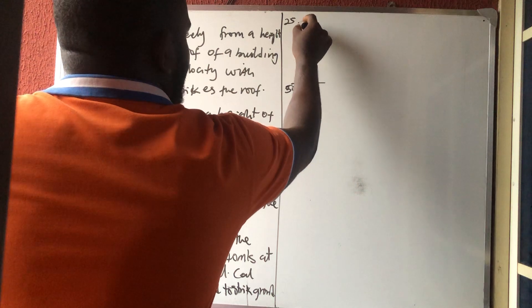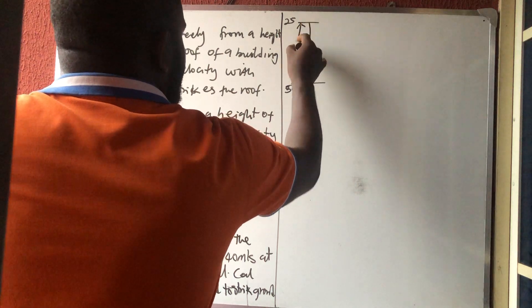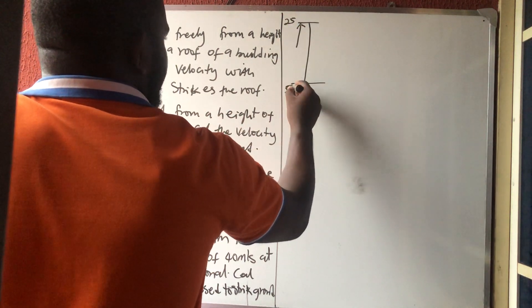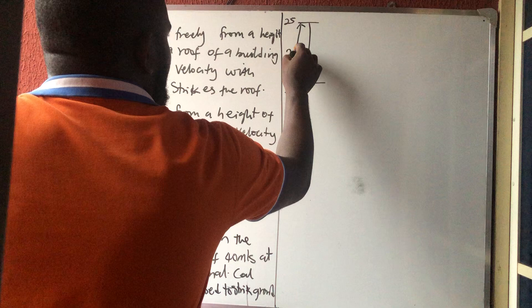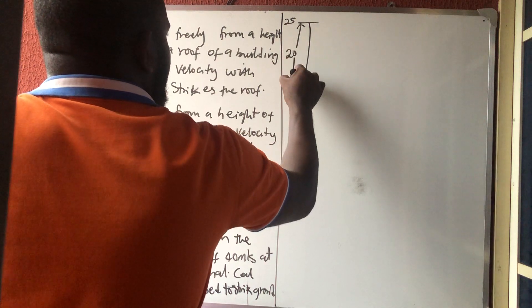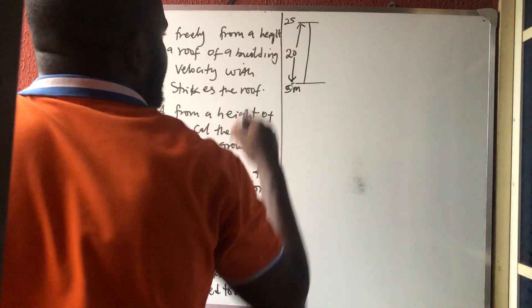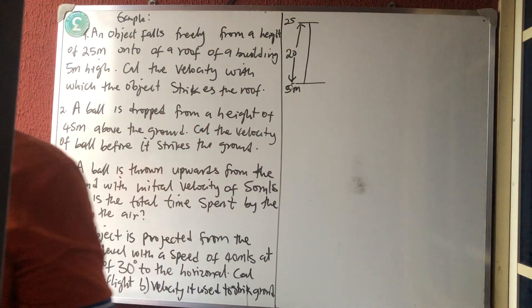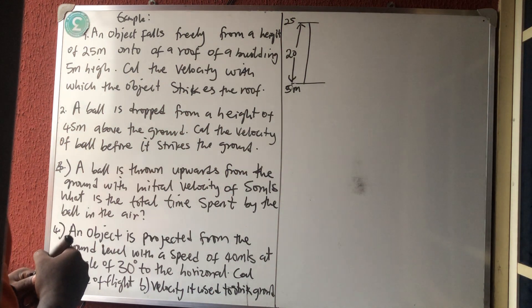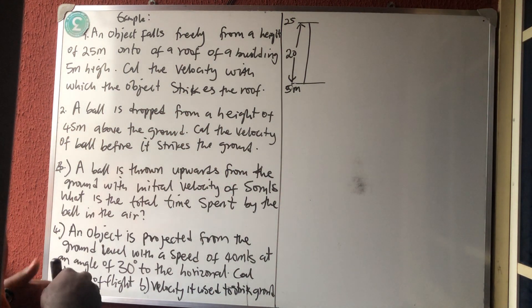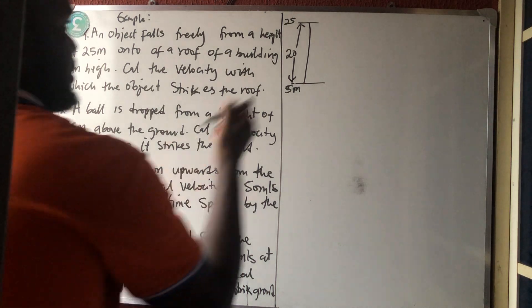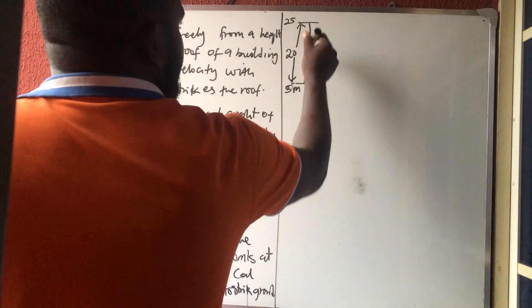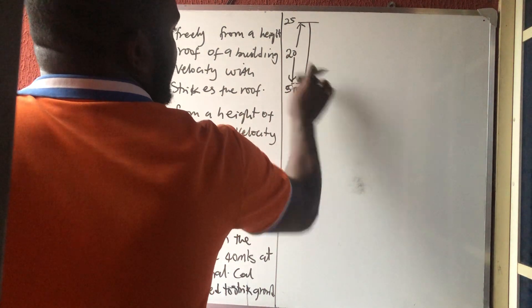So the distance this thing covered is 25 minus 5, which gives you 20 meters. So this is the height it covered. Then we calculate the velocity which is used to strike this place — this is where the object is thrown from.